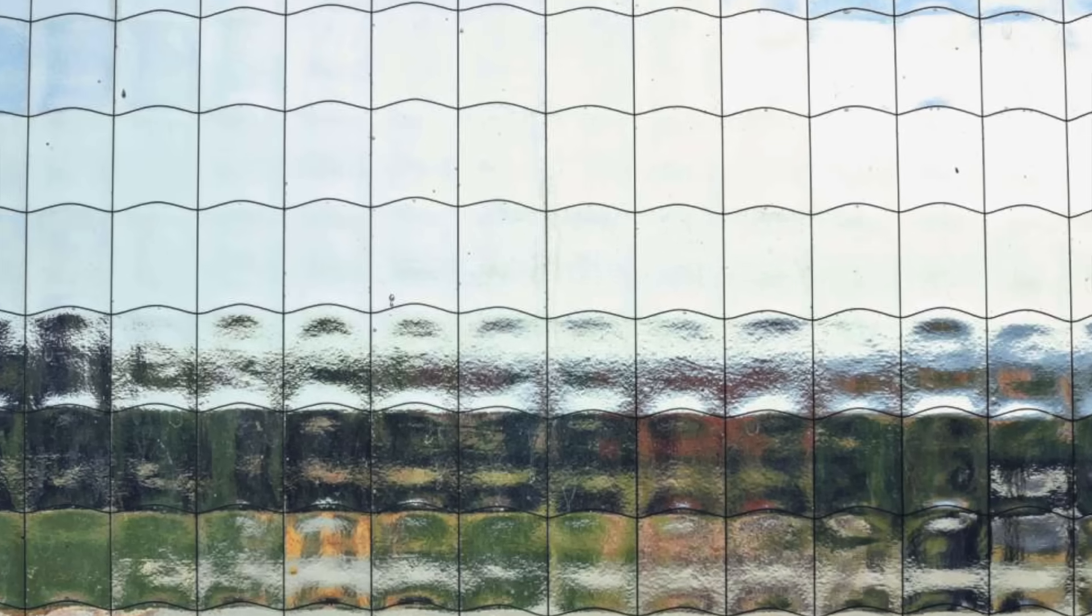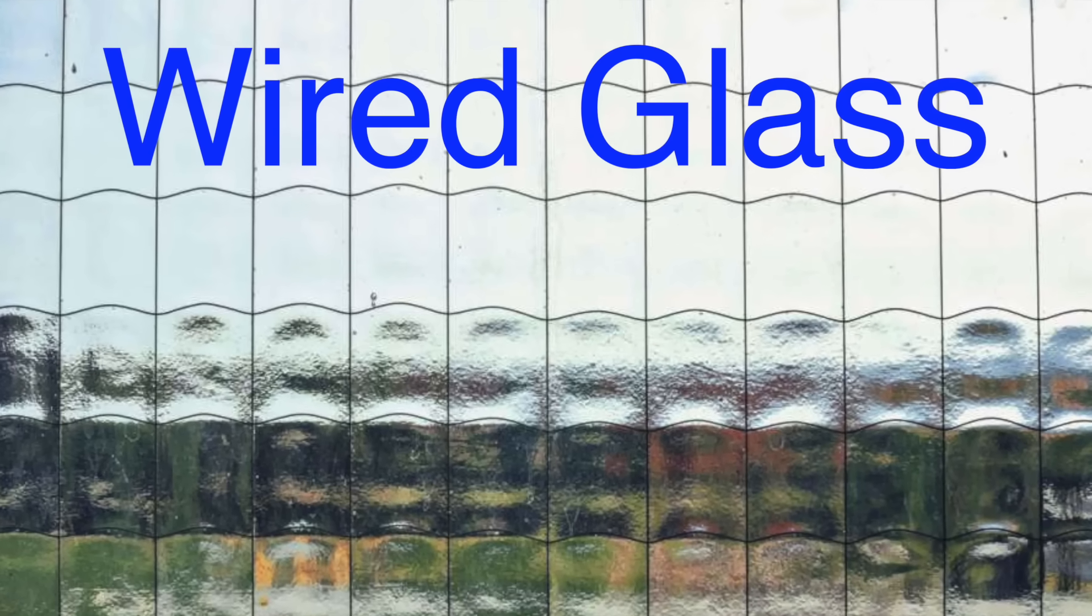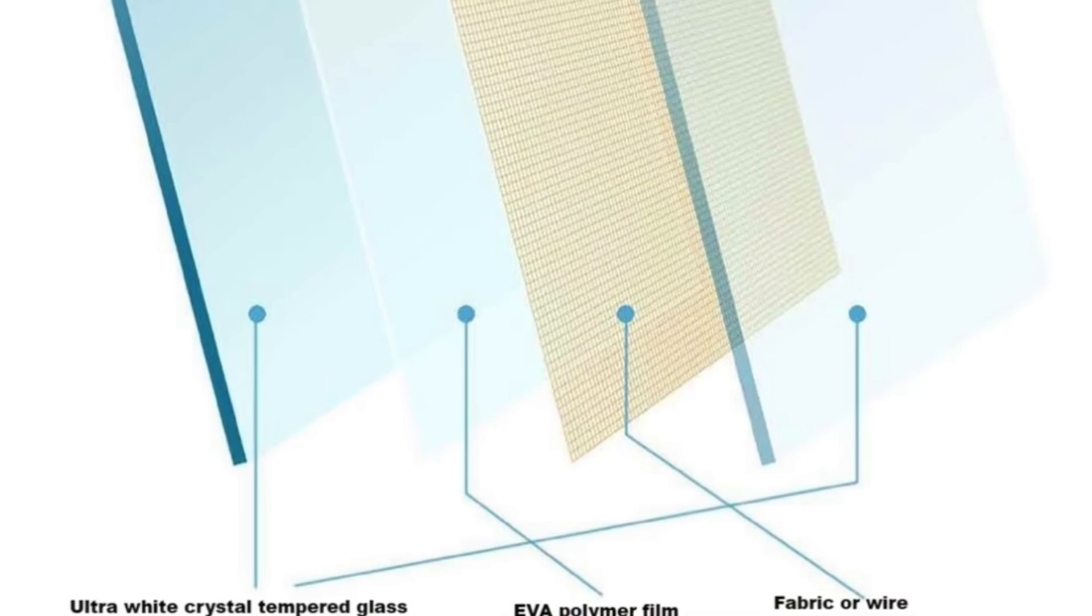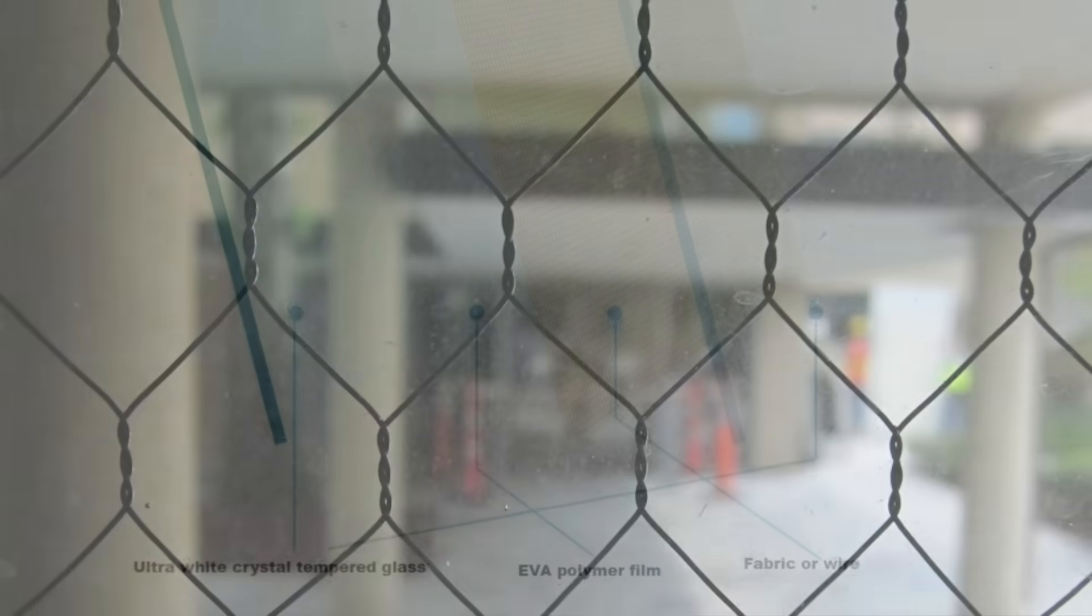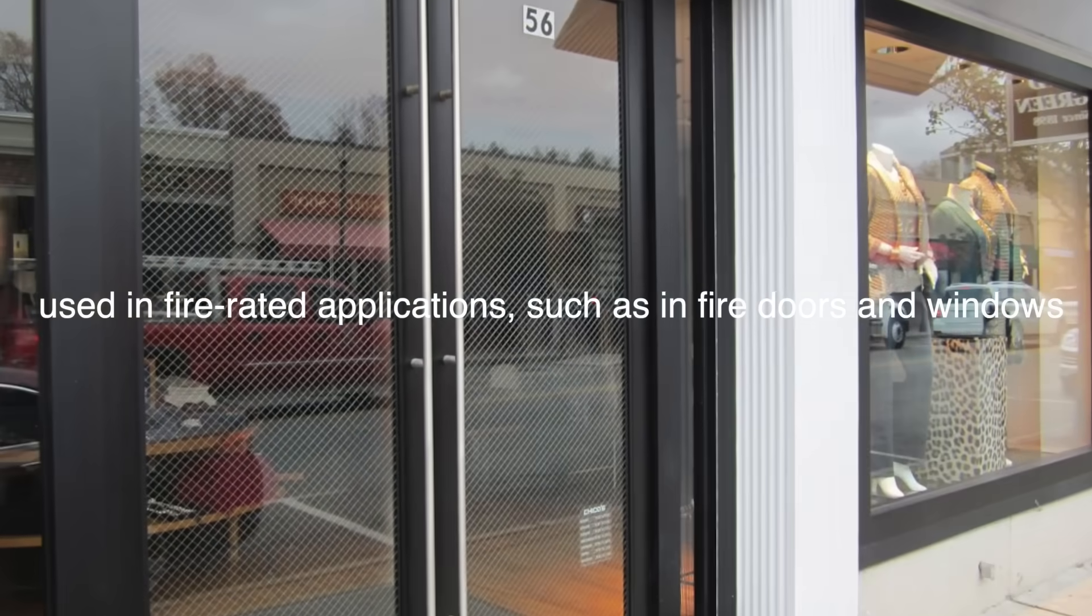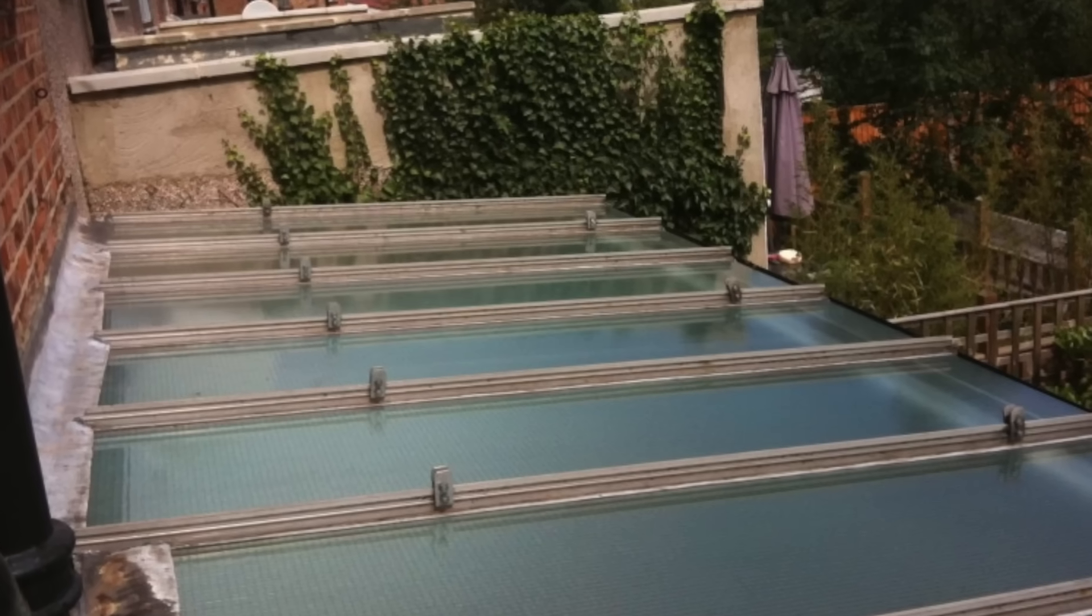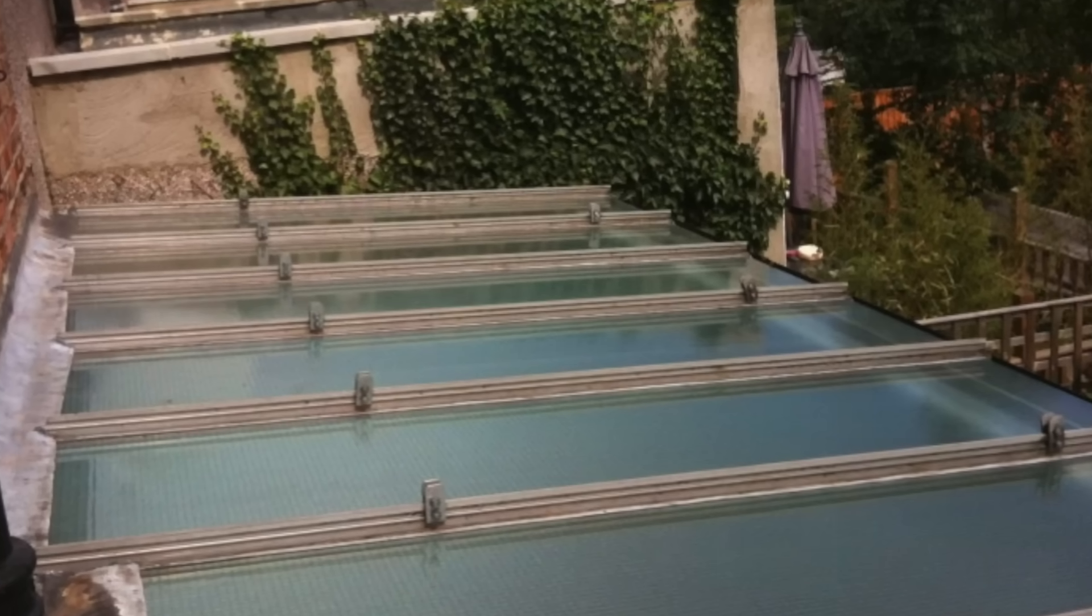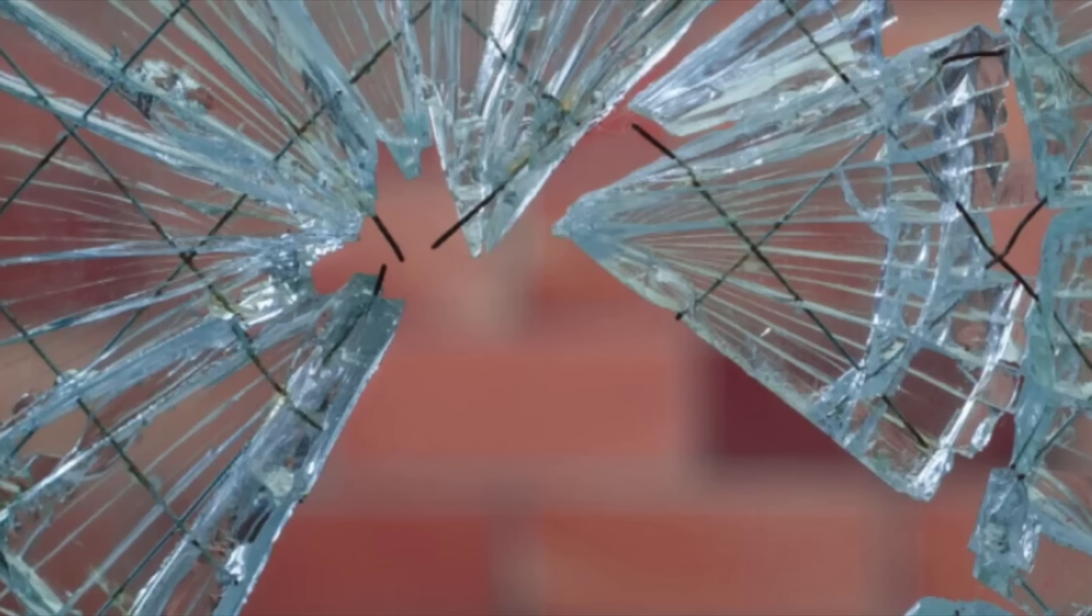Another type commonly used is wired glass, which has a wire mesh embedded within it. The wire mesh holds the glass together even if it breaks, making it more resistant to shattering. Wired glass is often used in fire-rated applications, such as in fire doors and windows, because the wire mesh helps prevent glass from breaking due to the heat of a fire. However, it is not as strong as tempered or laminated glass and can break into large, sharp pieces if subjected to a strong impact.